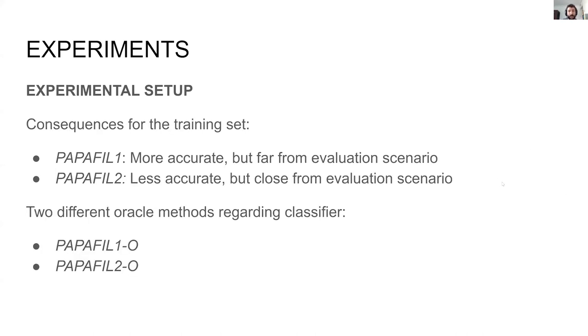The consequence is that PapaFil 1 has more accurate training data available, but such data is less similar than the actual data that we'll be using during the evaluation, compared with PapaFil 2. This situation also leads to two different oracle systems, denoted with the final O, that will be used for performance comparison.